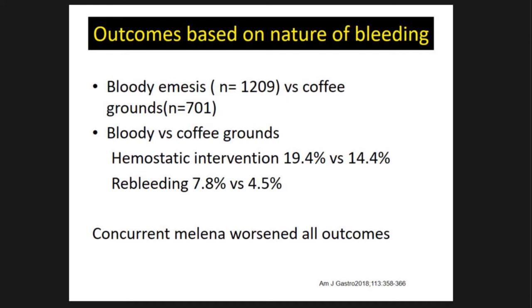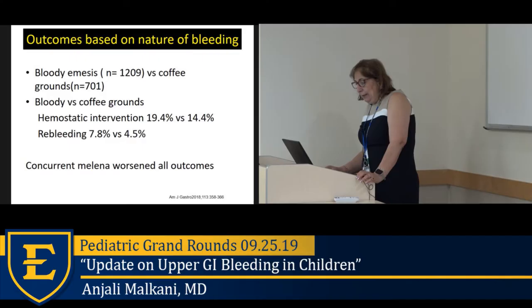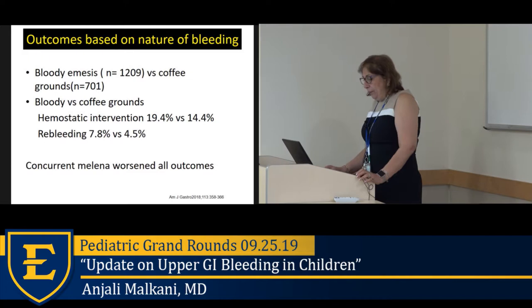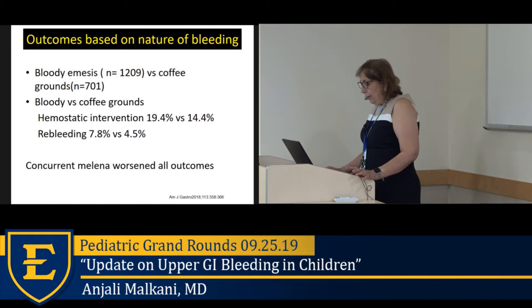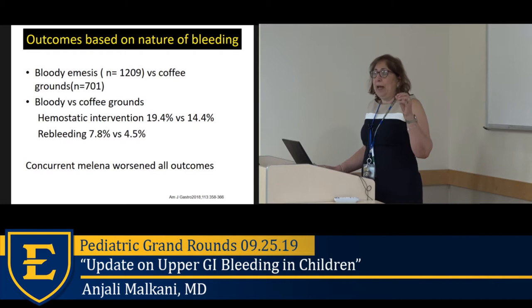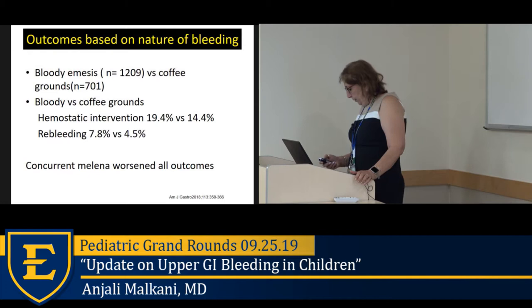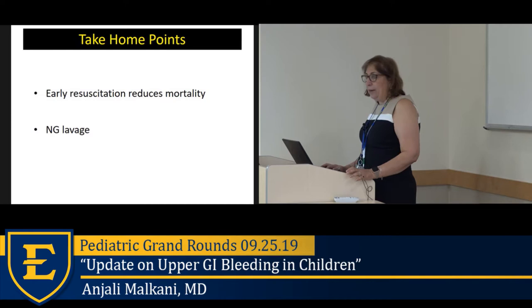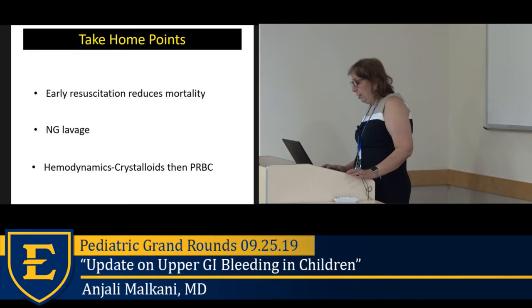Regarding outcomes based on the nature of bleeding — an adult study of 1,200 patients with bright red blood versus 700 with coffee grounds emesis found that bright red blood patients needed more hemostatic intervention at endoscopy (19% vs. 14%) and had higher re-bleeding risk. Interestingly, in both groups, concurrent melena worsened all outcomes. Take-home: early resuscitation reduces mortality; place an NG tube and lavage; manage hemodynamics with crystalloids then packed red cells.